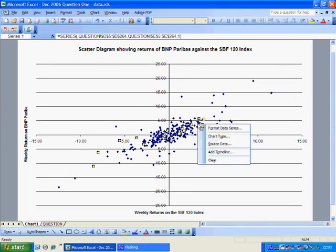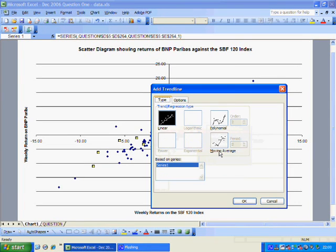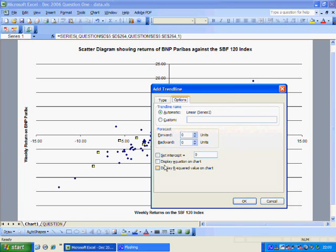We want a linear one, and we select options, and I want to display the equation on the chart, and I want to display the R squared on the chart. Click OK, and there we are.